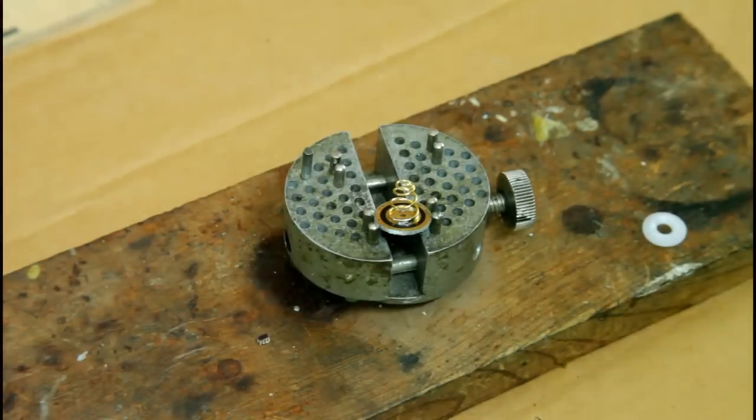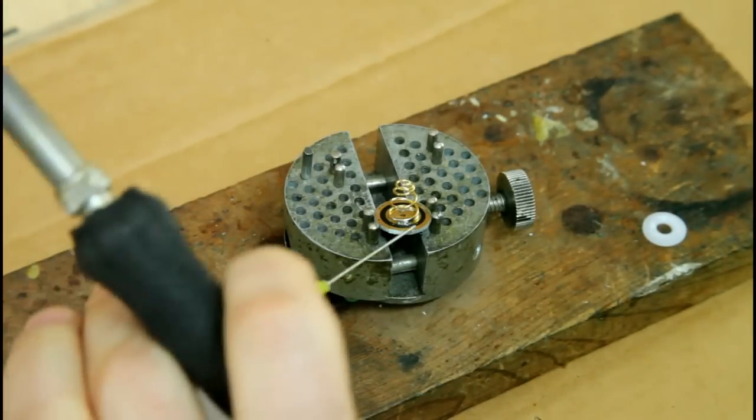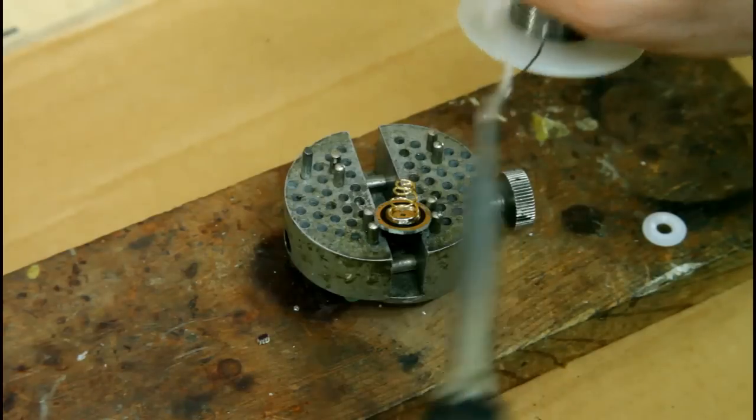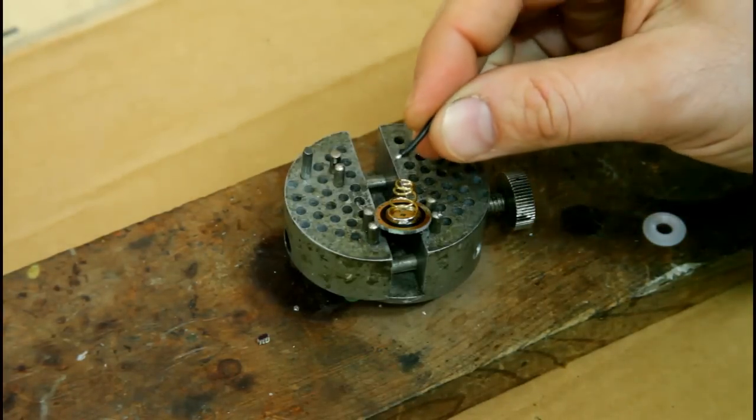One final thing we're going to do before we put our light back together is on this switch the weakest point in just about any of these mods or at least the place where the highest resistance is is in the spring so we're going to do a spring electrical spring bypass by adding a piece of wire to the center of that spring. It doesn't look super nice but it is going to give us a boost in current and so we're going to go ahead and do that.